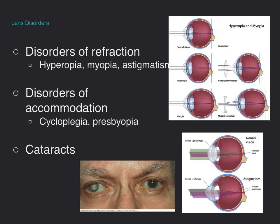Disorders of accommodation: cycloclesia is paralysis of the ciliary muscles, and it results in pupil dilation with a loss of accommodation. Presbyopia refers to a decrease in accommodation that occurs with aging. The lens nucleus becomes thickened and its capsule becomes less elastic, so the range of focus or accommodation is diminished. As a result, the person will begin to notice an inability to read small print or discriminate close objects, and this is usually worse in dim light or when the person is fatigued.